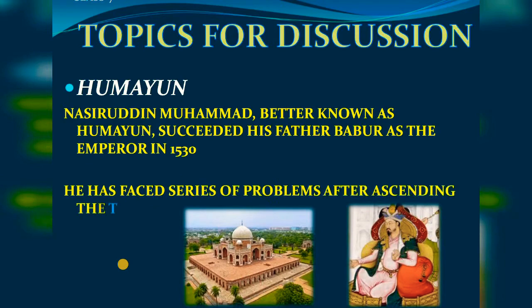He had an extremely turbulent life. He faced a series of problems after ascending the throne. After becoming king and taking charge of the Mughal Empire, many problems arose before Humayun, due to which his empire was somewhat shaken. What were those problems?